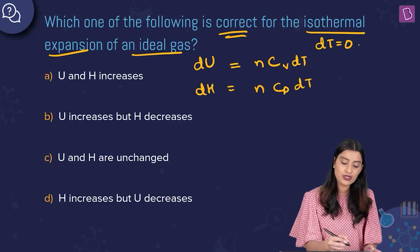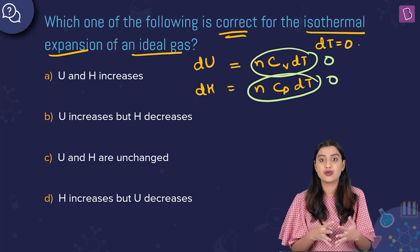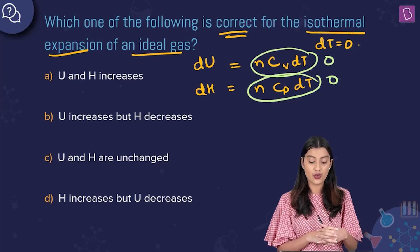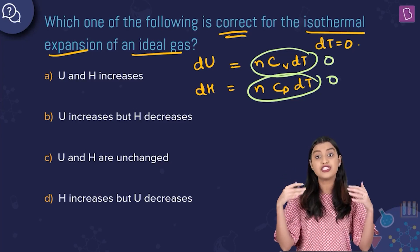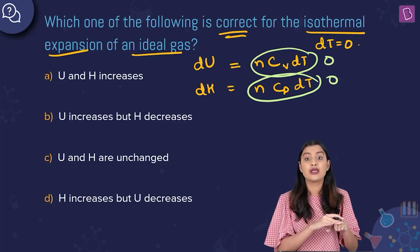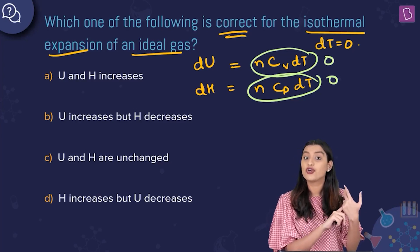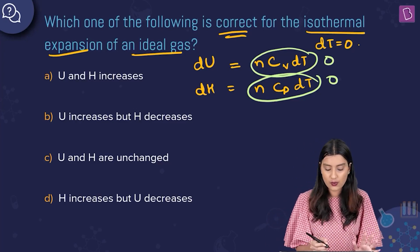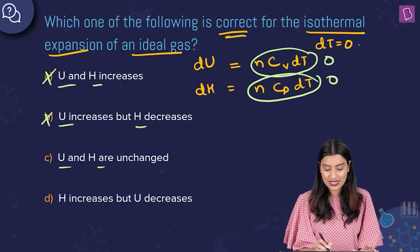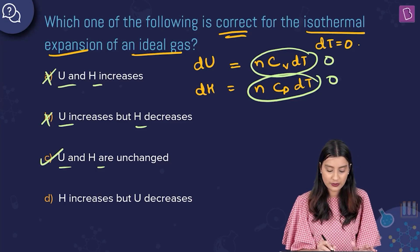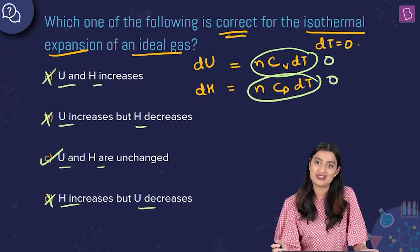Since DT = 0, both DU and DH become zero, meaning internal energy and enthalpy do not change. U and H are unchanged. Option A (U and H increase) — no. Option B (U increases, H decreases) — no. Option C (U and H unchanged) — yes. Option D (H increases, U decreases) — no. Option C is the right answer.